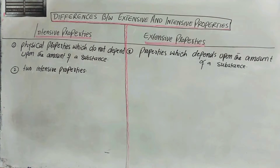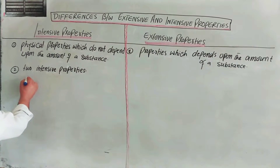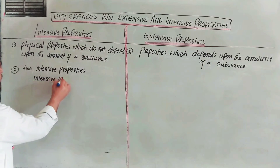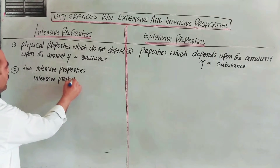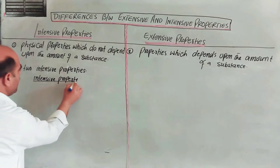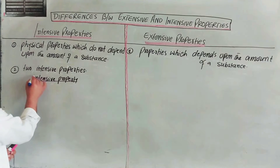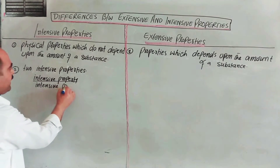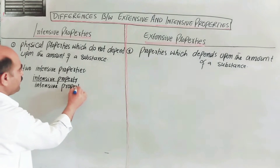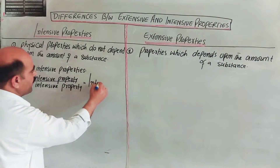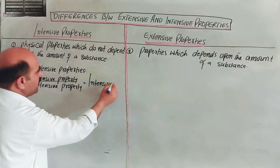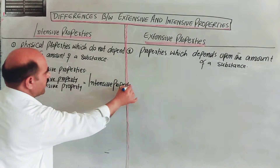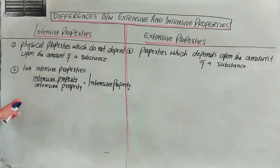So: intensive property divided by another intensive property is equal to an intensive property. This is a clear rule.